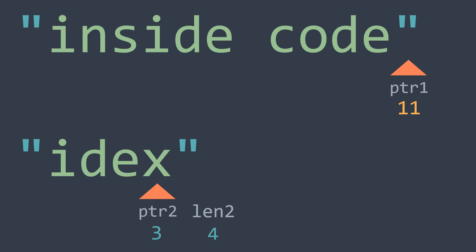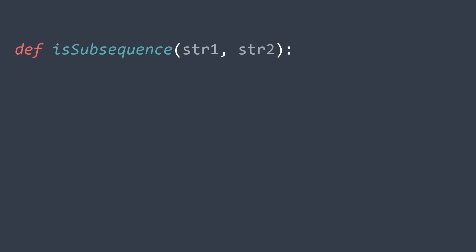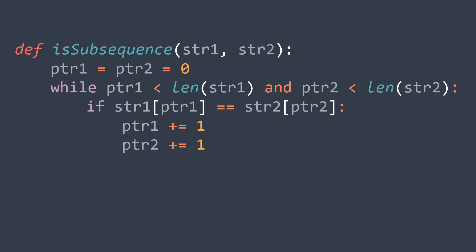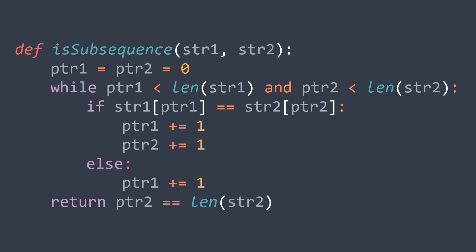Looking at the Python code of this solution: first we define our function is_a_subsequence that takes two parameters str1 and str2, then we create and initialize ptr1 and ptr2. Then while ptr1 is smaller than the length of str1 and ptr2 is smaller than the length of str2, if str1 at ptr1 is equal to str2 at ptr2, we increment both ptr1 and ptr2. Else, we increment ptr1 only. After the loop, we return the equality test ptr2 equal to length of str2.